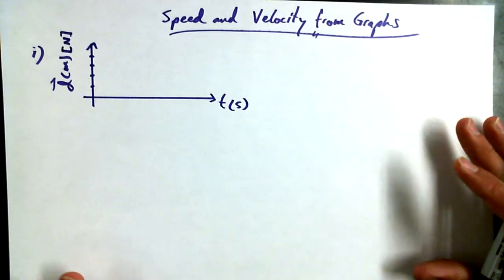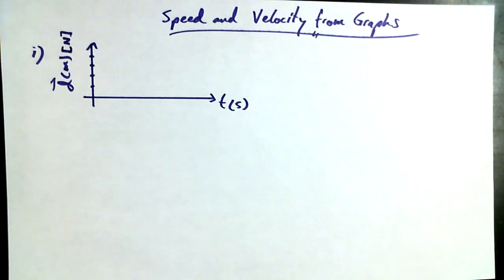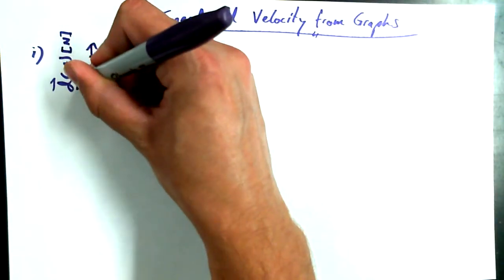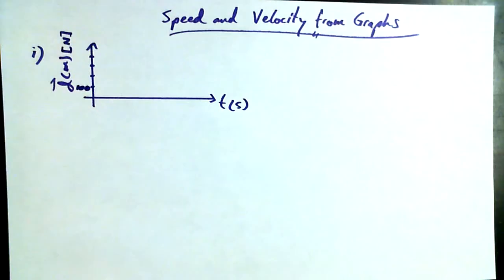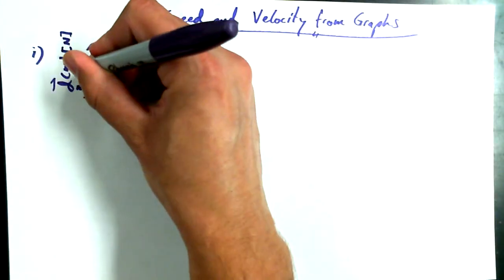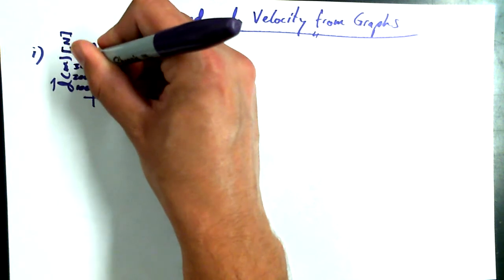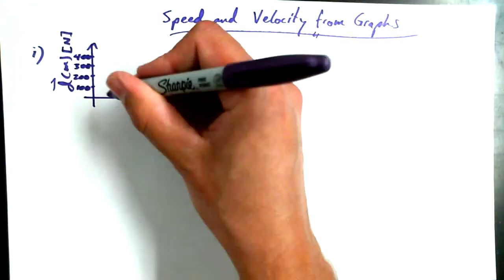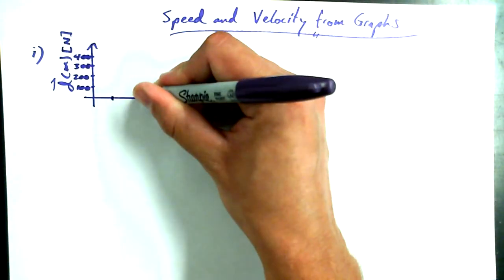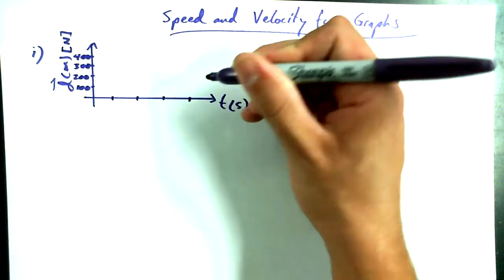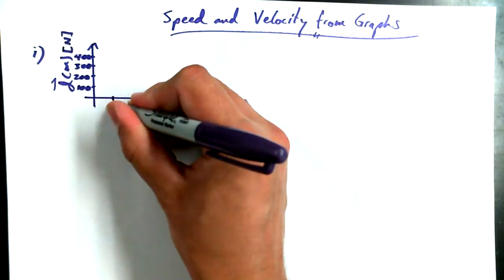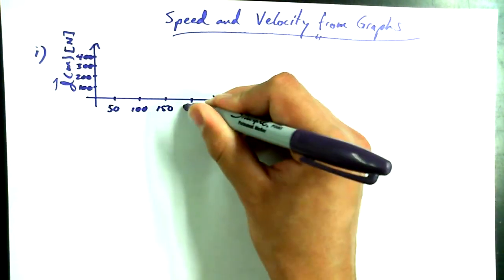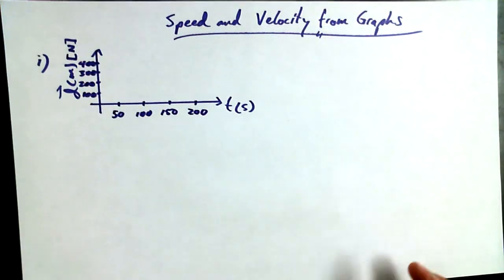So we've got position and time axes. On the vertical axis, I'm going to write increments of 100: 100, 200, 300, 400. And on the horizontal axis, I want to go out to 200 in increments of 50 seconds.